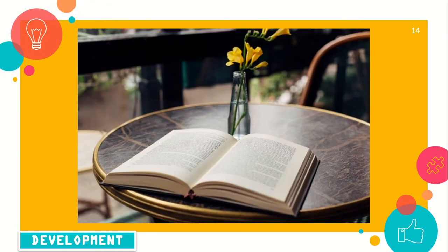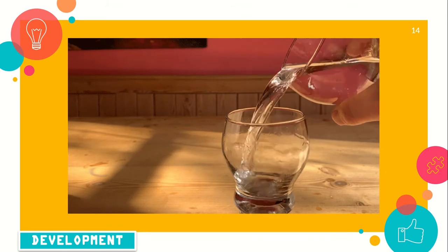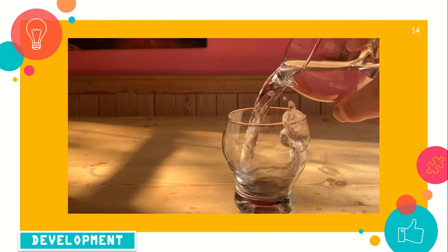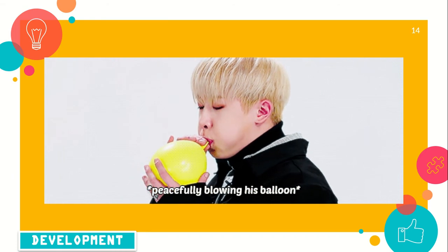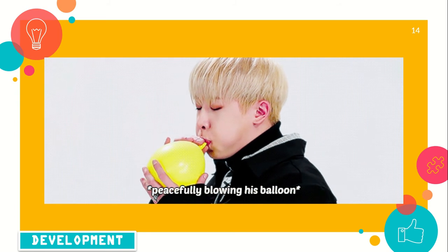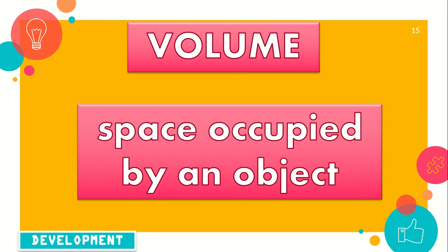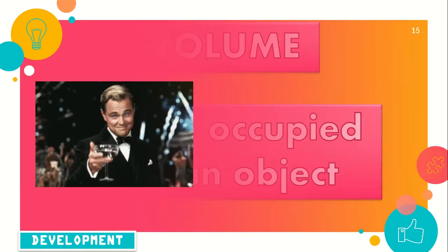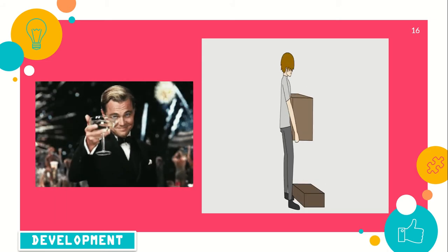Consider this book — it takes up a portion of space. When you put it on a table, your book occupies space. When you pour water into a glass, the water occupies the space inside the glass. When you blow air inside a balloon, the balloon inflates, meaning the air takes up the space inside the balloon. Matter takes up space, and that space is called volume. Volume is the space occupied by an object.